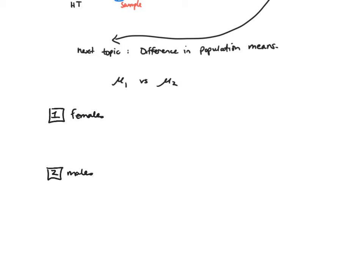In this stat class, there were typically more males than females, which was the case here. The number of females who wrote the midterm was 33, and the average of that sample was 66.1. The standard deviation for that group was 21.2. This sample is from my class, and we might allow the population to be something like all females enrolled in stat classes — something broader that contains this particular sample.